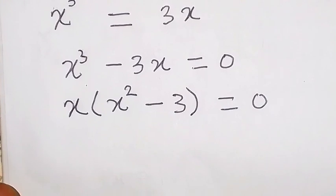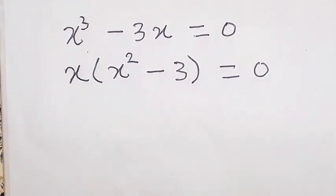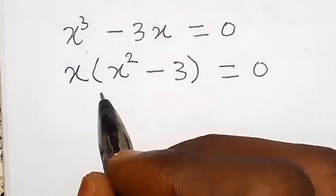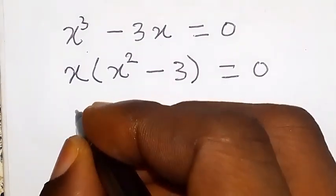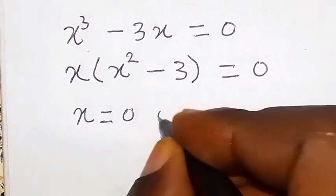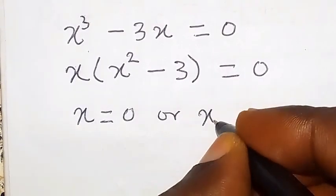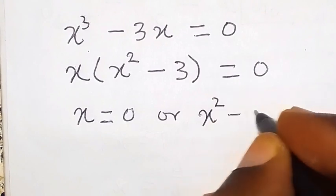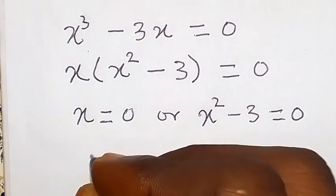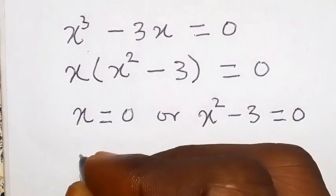So, that means that we multiply two numbers and the result gives us 0. So, either of the numbers has to be 0. Then we say, x equals to 0. Or, x square minus 3 equals to 0. So we have x equals to 0.